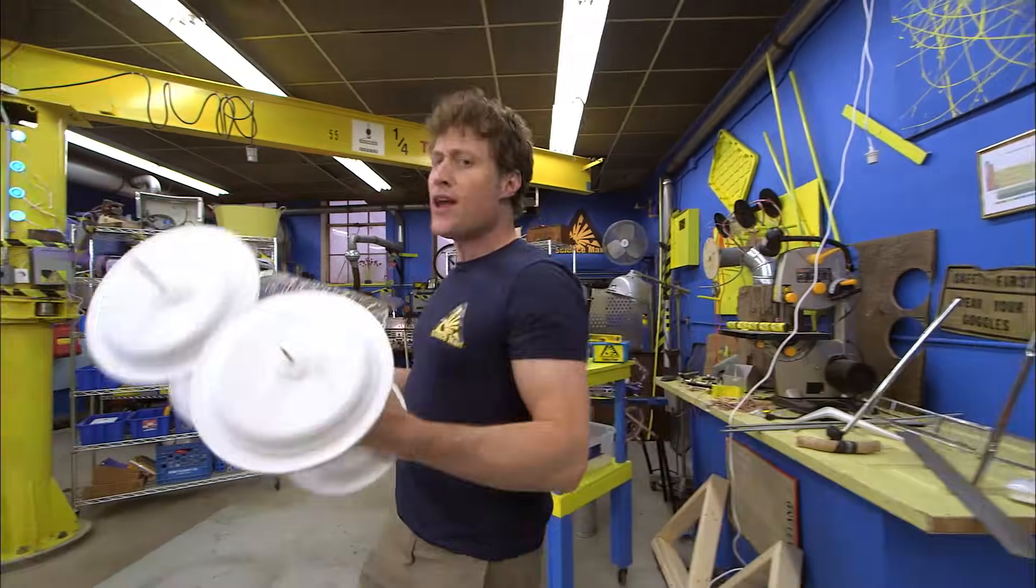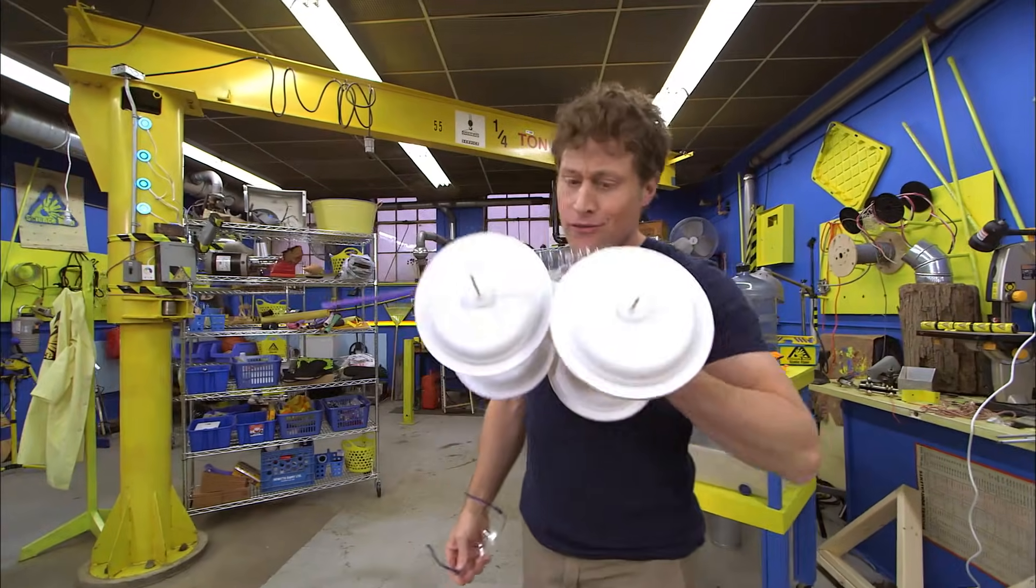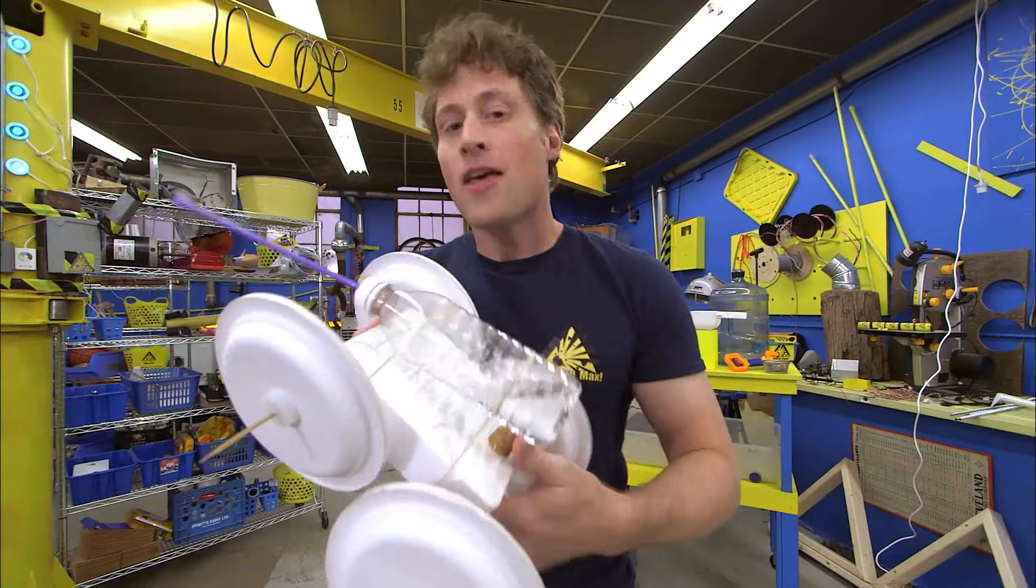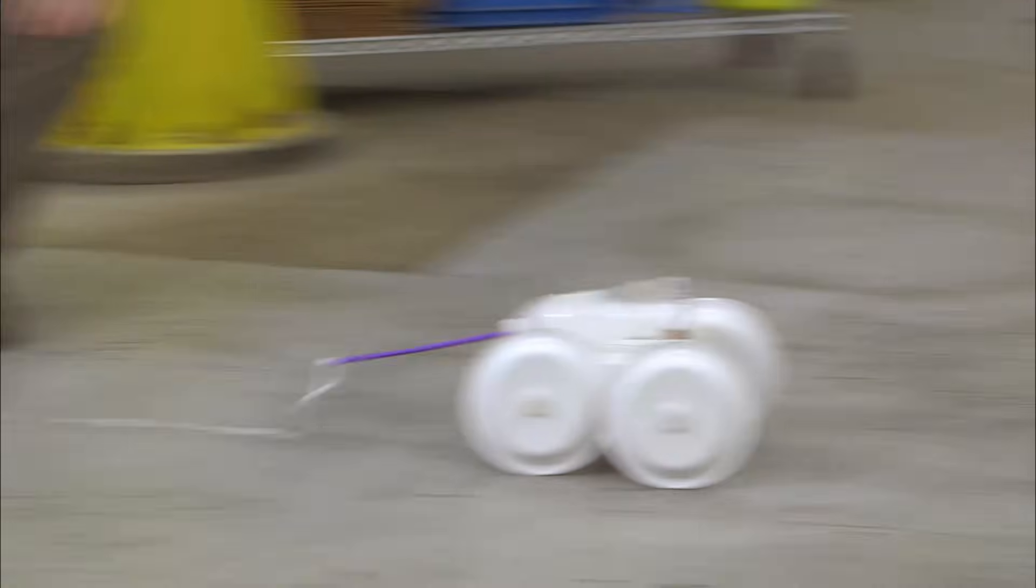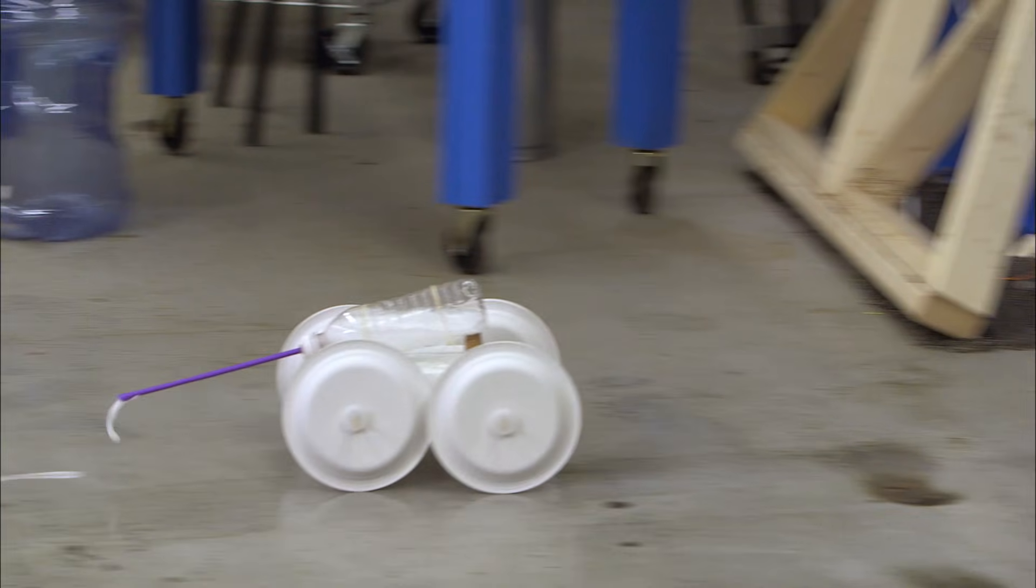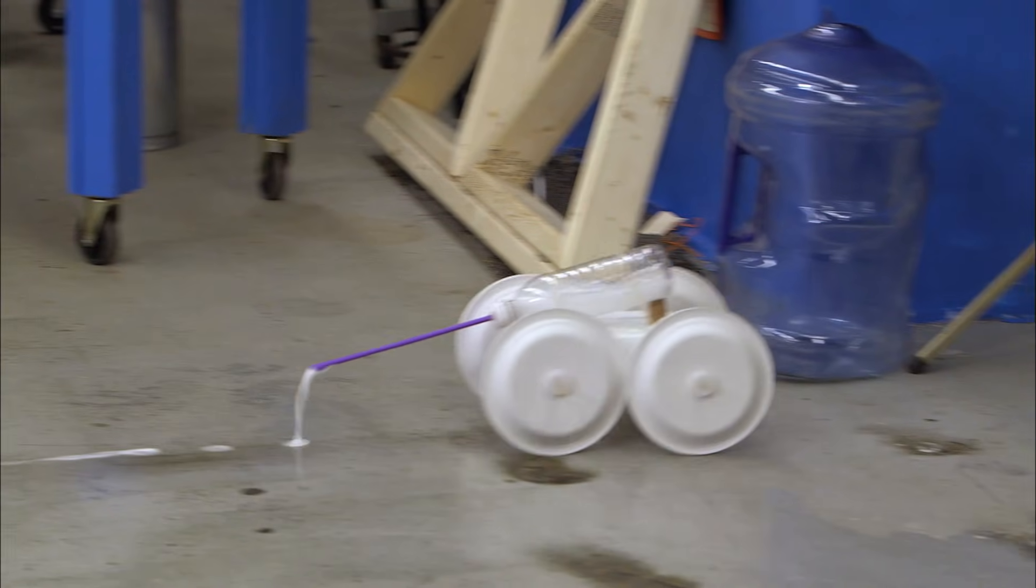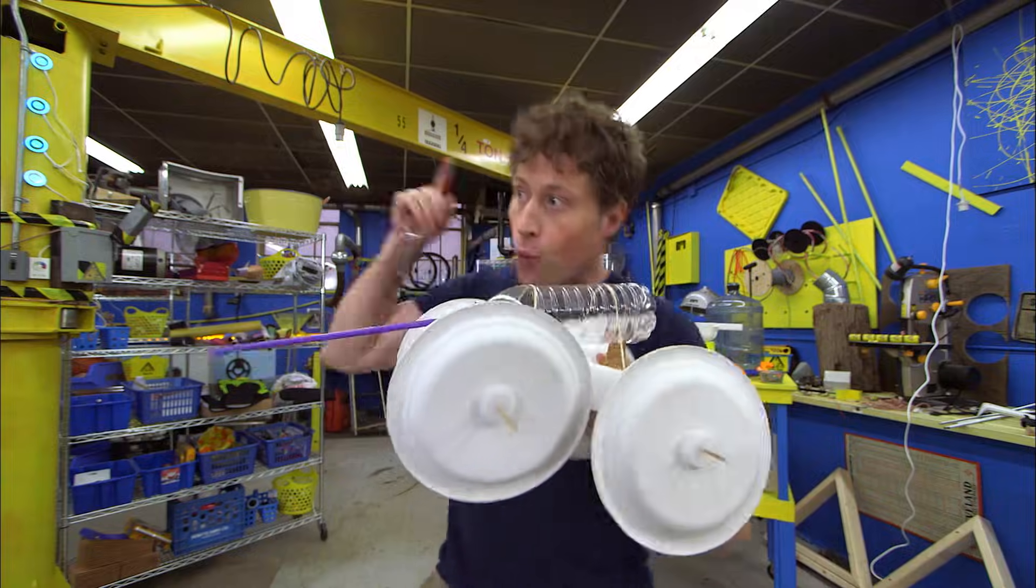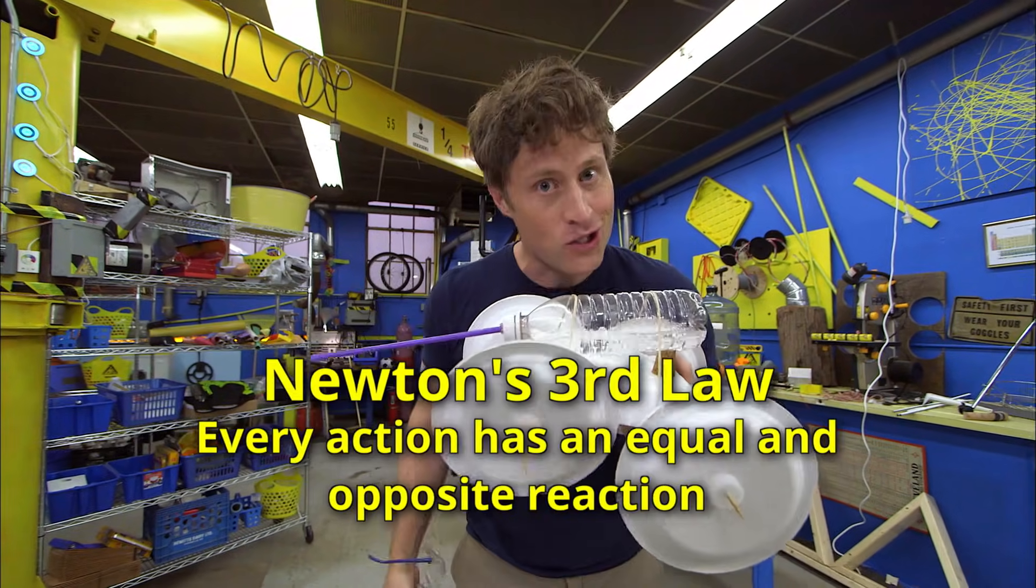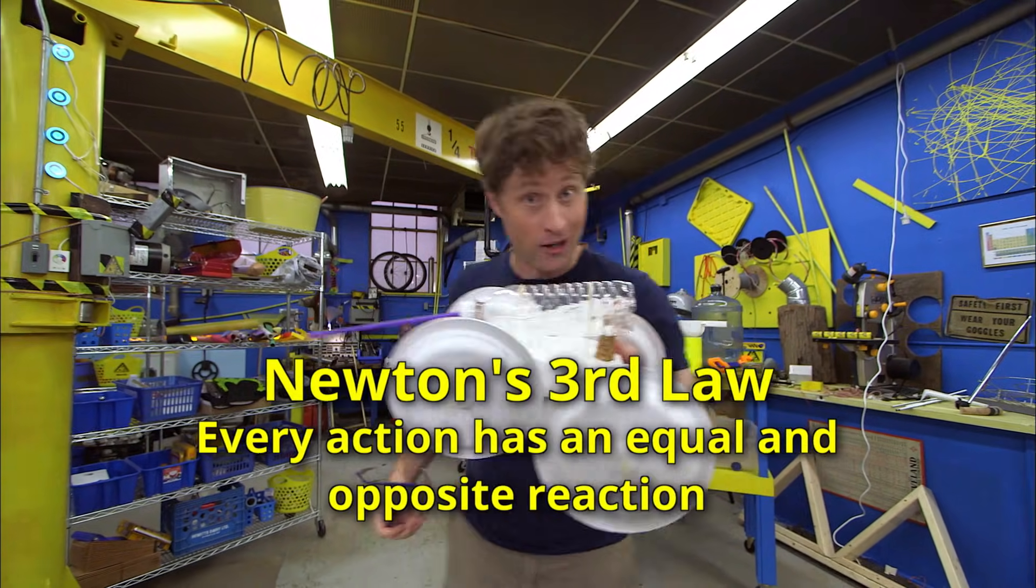Now I know what you're thinking. You're thinking, Phil, wait a minute, that's a vinegar and baking soda-powered car? Well, kind of. The vinegar and baking soda create a gas, and that gas creates pressure in the bottle, and that pressure forces the water out of the bottle. But it's the water leaving the bottle that creates the thrust. The water going that way pushes the car that way. Newton's third law. Every action has an equal and opposite reaction.